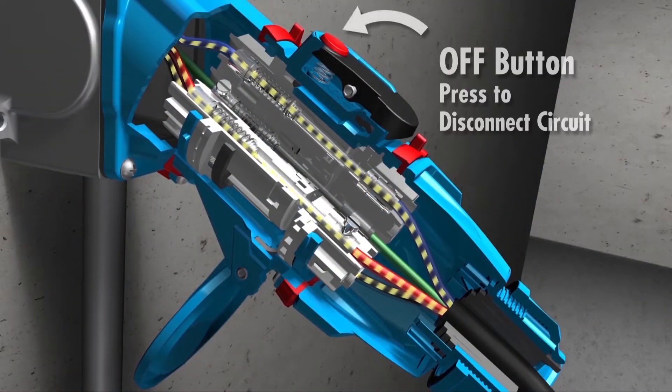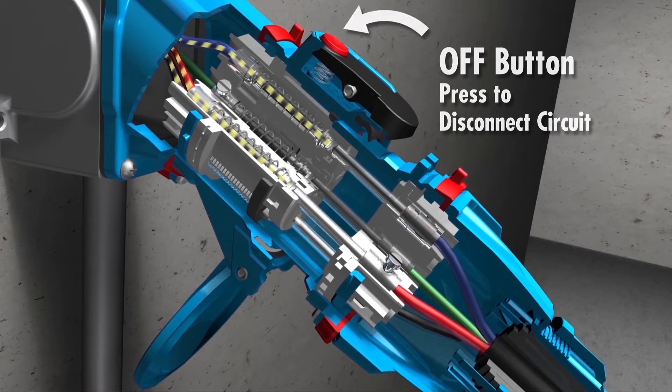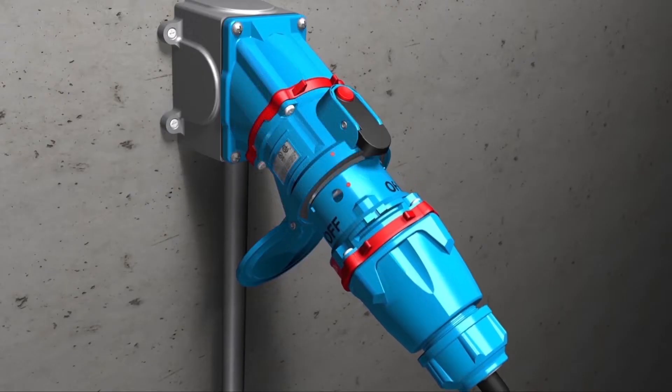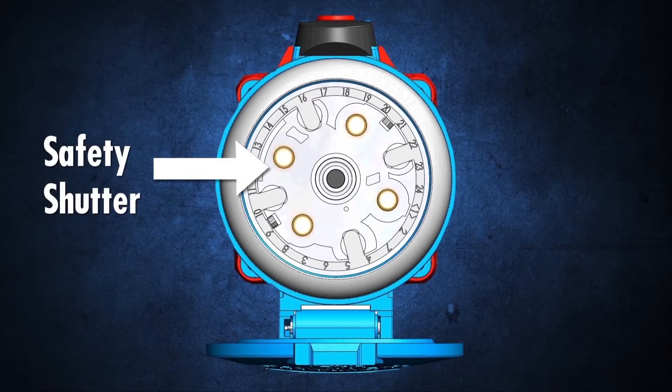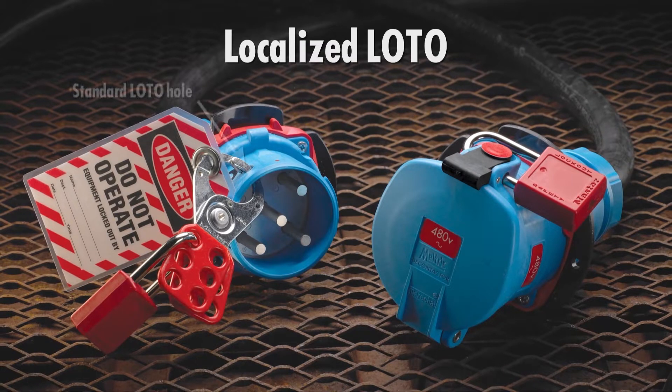An integral switch mechanism inside the receptacle safely de-energizes the plug before an operator can withdraw it. Once the plug is removed, a safety shutter shields the operator from live parts, and the plug can be easily locked out.